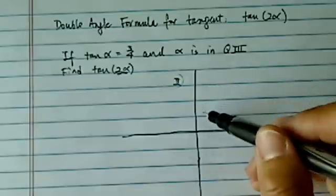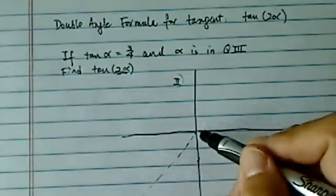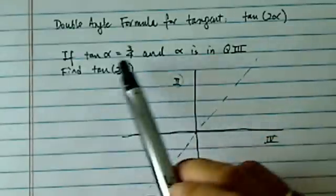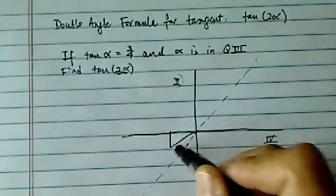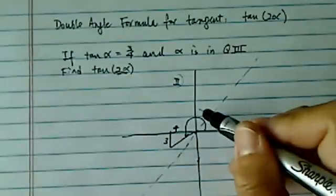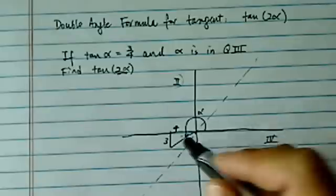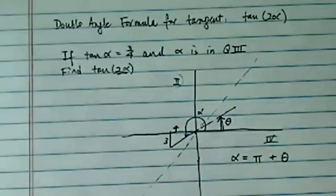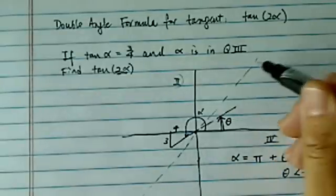Once we decide that, the rest is pretty easy. We were told tangent of alpha is 3 over 4. What I'm drawing here is a 45-degree angle — tangent of 45 is 4 over 4, which is 1. Since tangent of alpha is 3 over 4, it's a little shorter. So here's our alpha: 4 units on one side, 3 units on the other. Alpha is equal to pi plus a little bit of theta — what we call the reference angle. This theta is less than pi over 4.